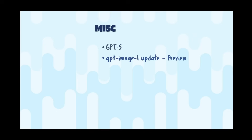GPT Image 1 has had an update for image generation. You now have better control over fidelity based on source materials — for example, if you want to maintain brand identity from a photograph, you can set the fidelity to preserve logos. It can also start to stream partial images.